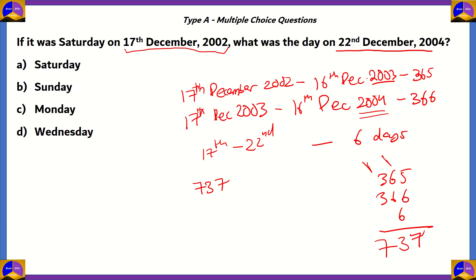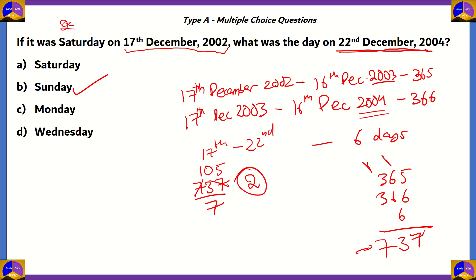To find the day of 22nd December, we find the remainder of dividing 737 by 7. If the remainder is 1, it's Saturday; if 2, it's Sunday, and so on. Dividing 737 by 7, we get a remainder of 2. Since the remainder is 2, this means 22nd December 2004 was a Sunday — option B.